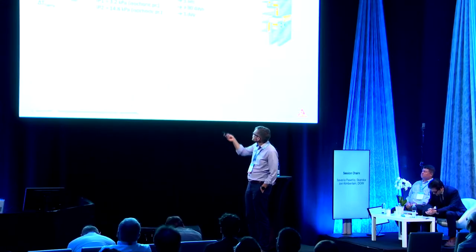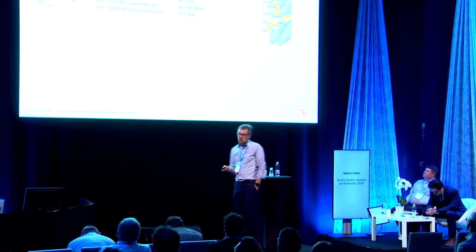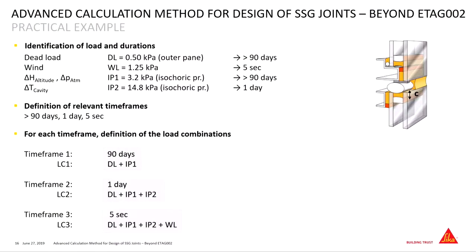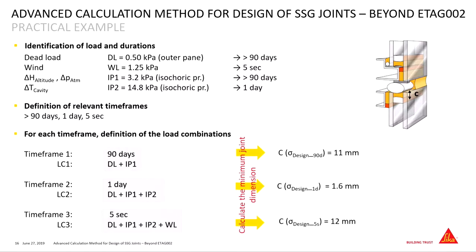You see here that you have a permanent load. You have the wind load again as short-term. Then you have some topics out of the climatic load which are permanent as well — like the altitude difference between production and installation. But then the climatic load out of temperature, for example, is more a topic that could act on a daily basis — again a different time frame. Then the calculation follows the same approach: three different time frames, three different load cases, and for this particular case, 12mm as a secondary seal thickness would be the right value.